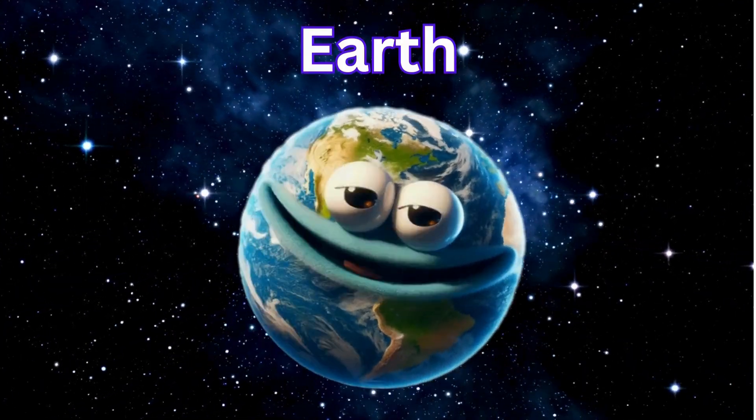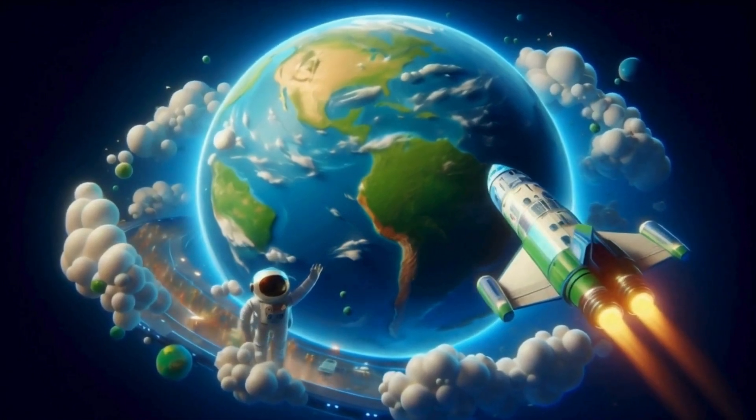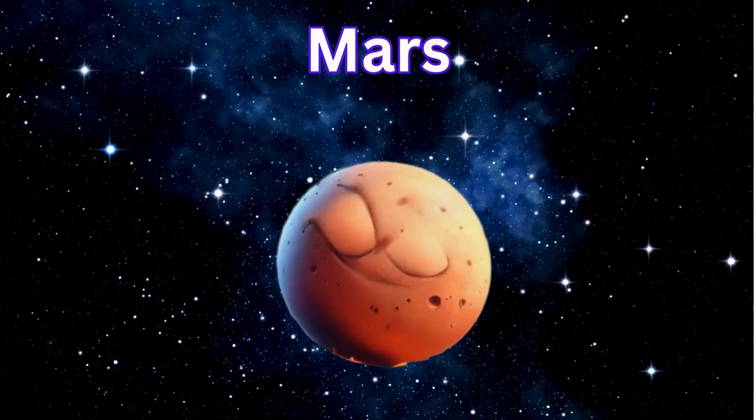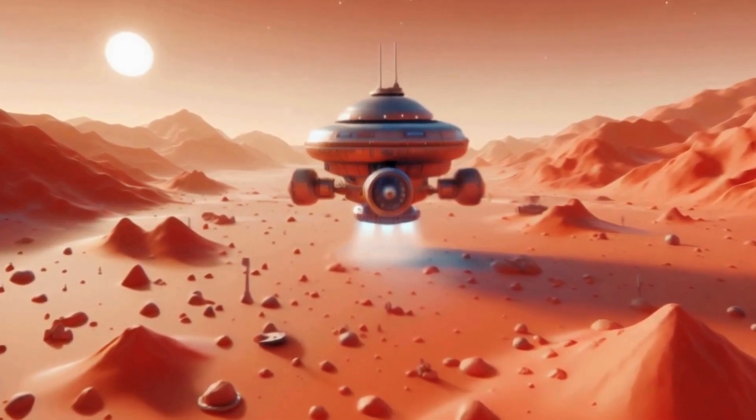Earth, our home, blue and green with oceans, mountains, forests, sea. Mars is red with dust and sand, mountains tall across the land.